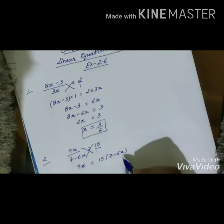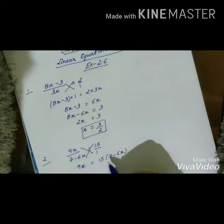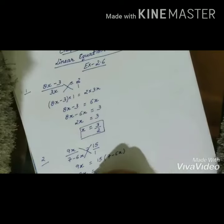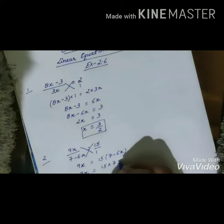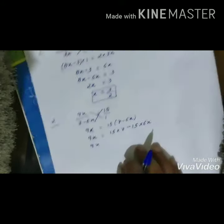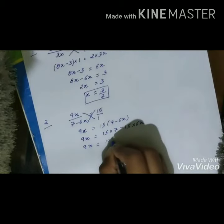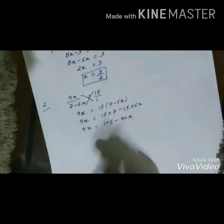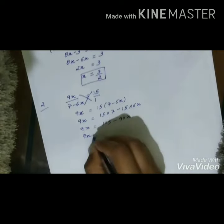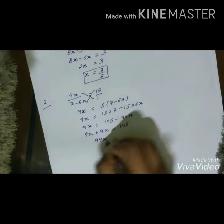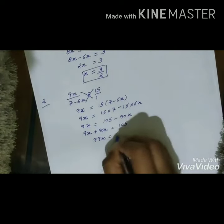As we know, (7 - 6x) is in brackets, so we need to multiply 15 by both terms — 7 and 6x. After multiplication, we will get 9x = 15 × 7 + (minus) 15 × 6x. So 9x = 105 - 90x. Now we need to separate variables and constants. For this, we transpose 90x to LHS: 9x + 90x = 105. After solving, we get 99x = 105.